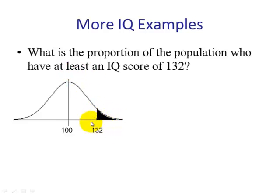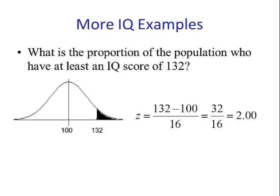So from the picture, we see that this is less than 0.5. Our next step is to change 132 to a z-score. This ends up being 2.00. And using table 5, we look up 2.00, and we have to subtract it from 1 because it's a greater than, and we see that the answer is 0.0228.